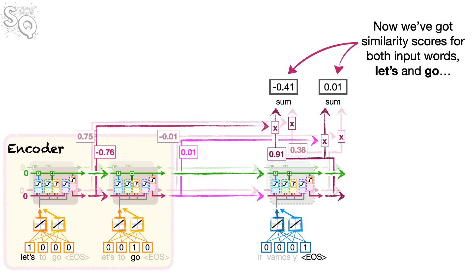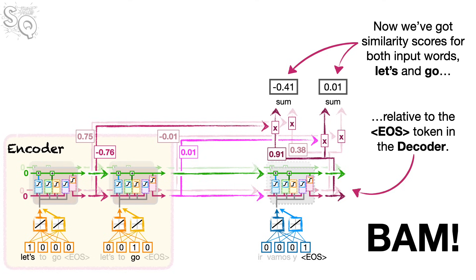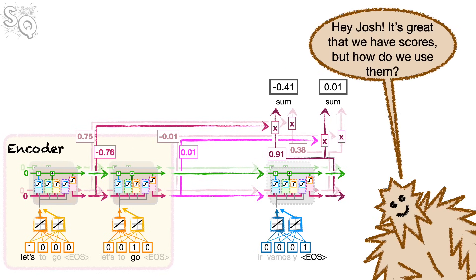Now we've got similarity scores for both input words, LETS and GO, relative to the EOS token in the decoder. Bam! Hey Josh, it's great that we have scores, but how do we use them?